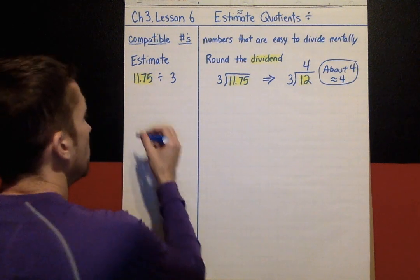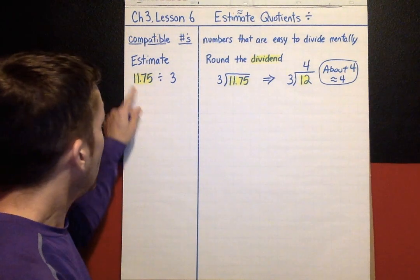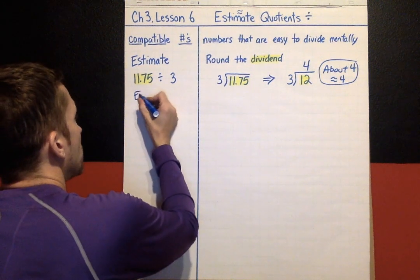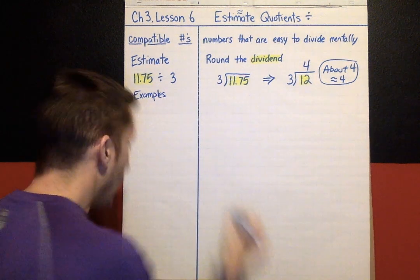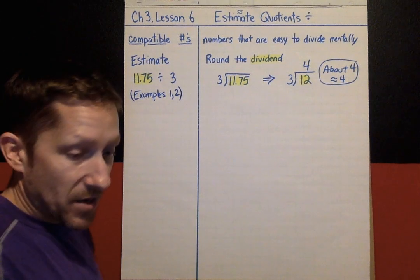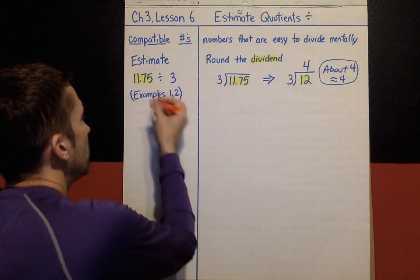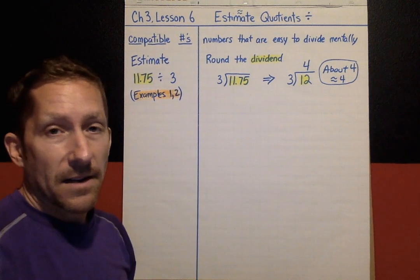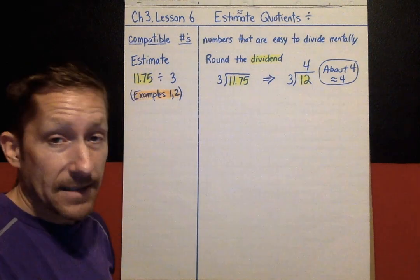By the way, rounding the dividend covers examples one and two in your book. So if it says example one or two, you should look at rounding the dividend. I'm going to highlight those orange because in your book on your practice problems it's that little orange text next to the number that says 'example.'